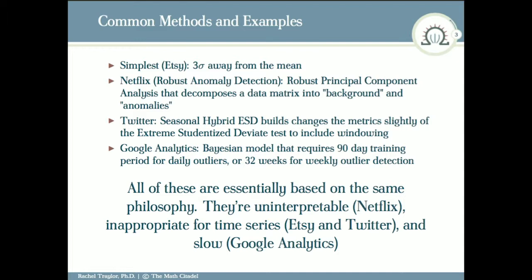Netflix calls theirs robust anomaly detection. They basically try a matrix method. They'll take a data set, and this can be done in multiple dimensions, and they'll decompose that into what they call a background or normal matrix and an anomaly matrix. They've used PCA to do that. What are some issues? One, PCA is not interpretable. Once I run PCA and do some regression on those principal components, what do those coefficients mean anymore? Nothing. Netflix does a good job when you implement it, but it's not very interpretable.